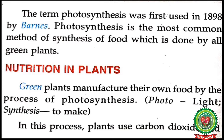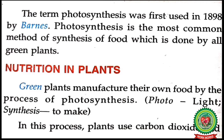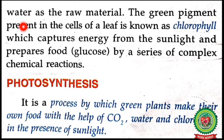Look at page number 45. The term photosynthesis was first used in 1898 by Barnes. Photosynthesis is the most common method of synthesis of food, which is done by all green plants. Green plants manufacture their own food by the process of photosynthesis. In this process, plants use carbon dioxide and water as the raw materials.